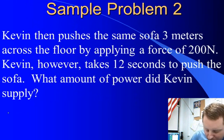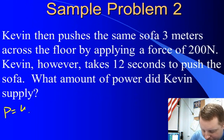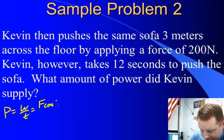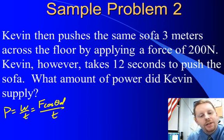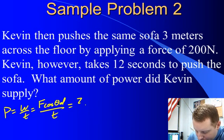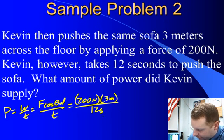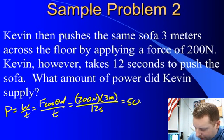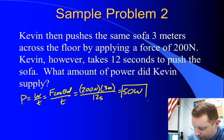Well, same formula again, power equals work over time, which is going to be force cos theta times d over t, and again cos theta is going to be the cosine of 0 or 1, so that's going to be our force 200 newtons, 3 meters displacement over 12 seconds for a total power output of 50 watts.